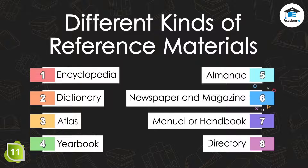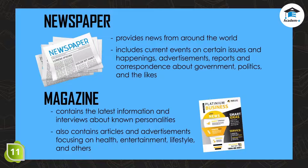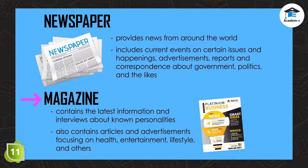The sixth reference materials are newspapers and magazines. A newspaper provides news from around the world. It contains articles on current events, certain issues and happenings, advertisements, reports, and correspondence about government, politics, etc. It is divided into different sections and parts. A magazine, on the other hand, contains the latest information and interviews about known personalities. It also contains articles and advertisements focusing on health, entertainment, lifestyle, and others.